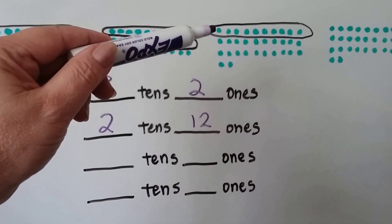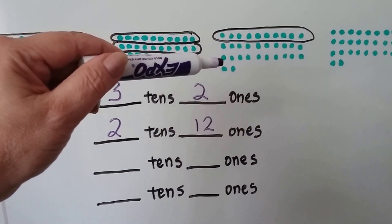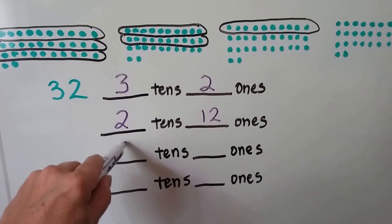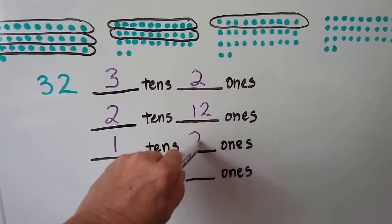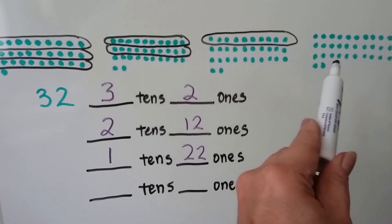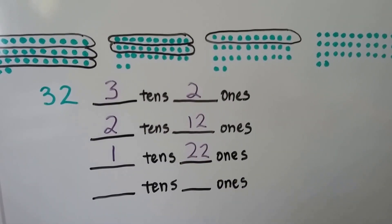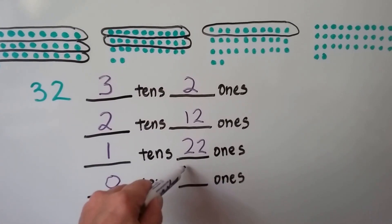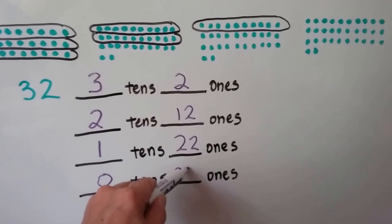We can show it as one tens and 22 ones. We can also show it as 32 ones. That would be zero tens and 32 ones.